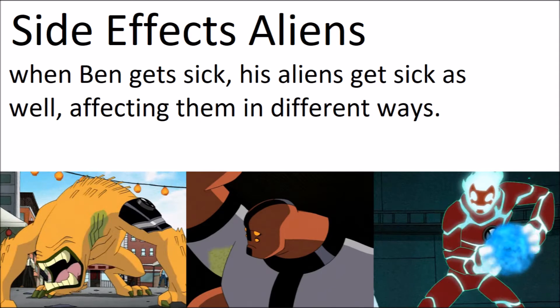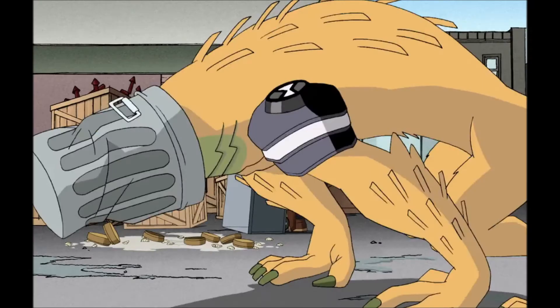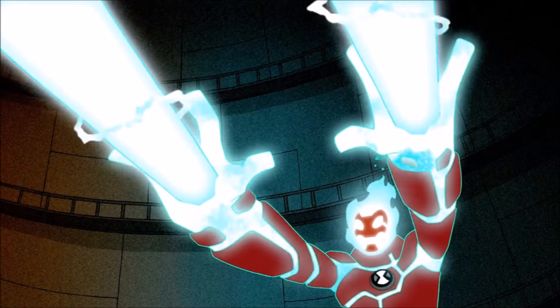The very first Omnitrix gimmick is the side effects aliens. There is an episode in the original show called 'Side Effects.' In this episode, when Ben gets sick his aliens get sick as well, affecting them in different ways. For example, Wildmutt uses his nose to see because he doesn't have eyes, but because Ben has a cold his nose is clogged up, so Wildmutt is blind whenever Ben's sick. And then for Heatblast, since Ben has a cold, his powers have gone from heat to cold — so now he's got ice powers.